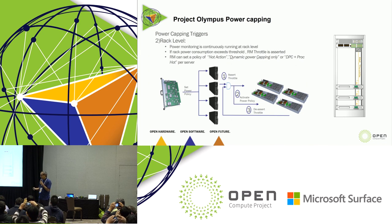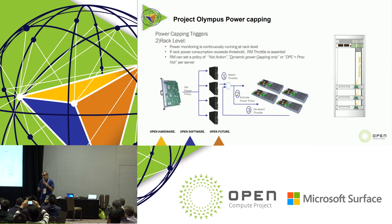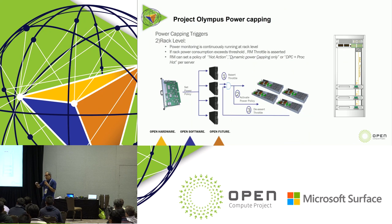At the rack level, we have a component called the universal power distribution unit. From the rack manager, to realize rack-level power capping, there is a signal called RM throttle running through the PDU that goes to every single server in the rack. That's used for the fast proc hot if needed — the first step of power capping goes to the lowest frequency possible, and then the policy is applied.